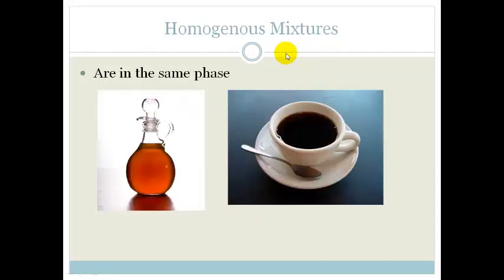Whereas a homogeneous mixture is something that's all in the same phase. So for example, your salad dressing is usually something that's dissolved into something else. Or for example, when your coffee has your coffee granules dissolved into the hot water with some sugar. That is a homogeneous mixture.